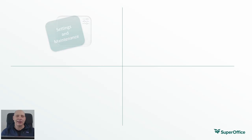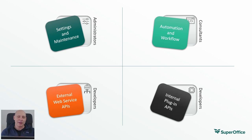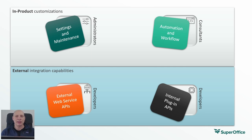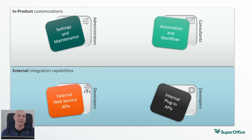The two ways I like to think about this are, first, in-product customization options, and there are also external integration capabilities. The in-product customization options are where individual users go in and set their personal preferences, or administrators go in and configure things like user roles, functional permissions, and default system behaviors. Both administrators and technical consultants alike can access the advanced automation features that enable a wide range of capabilities that we'll talk about more in just a minute.